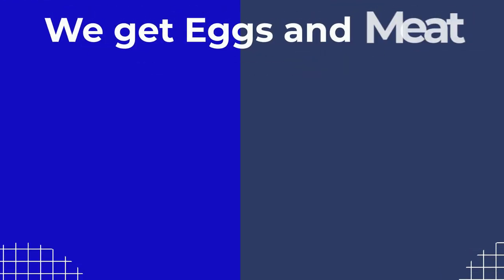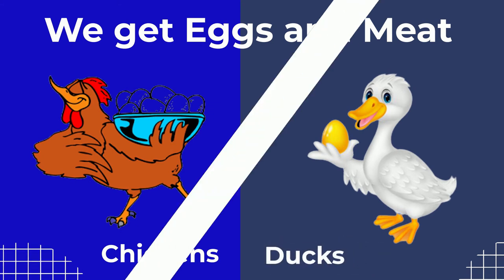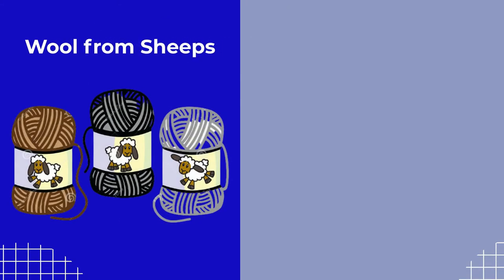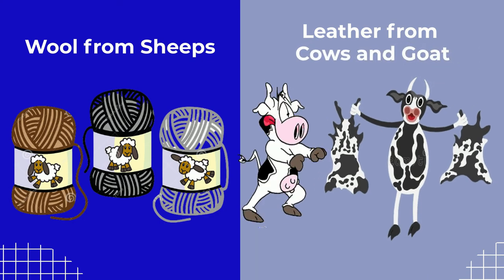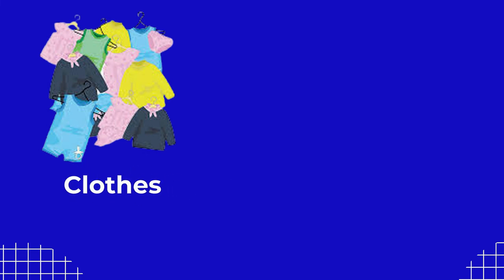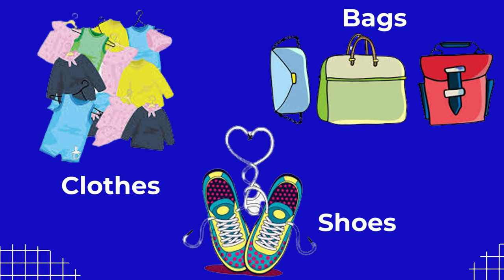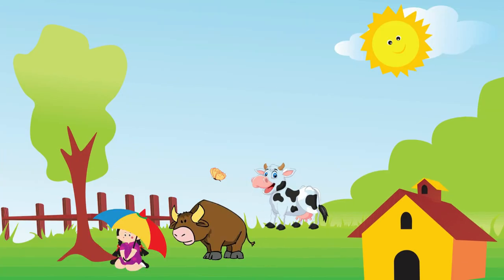We get eggs and meat from chickens and ducks. We get wool from sheep and leather from cows and goats, which are used to make clothes, bags, and shoes. Cows and buffaloes are also used by farmers to plow the farmland.